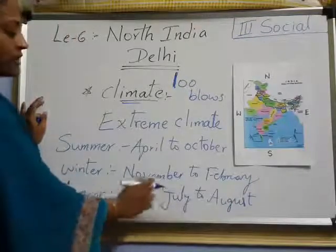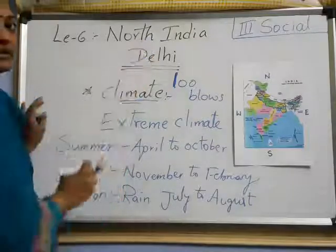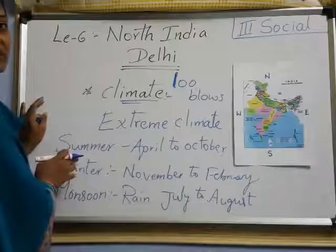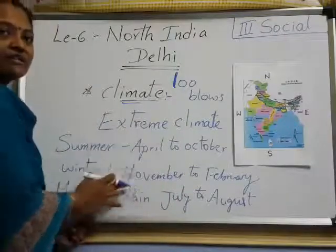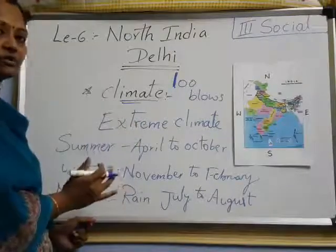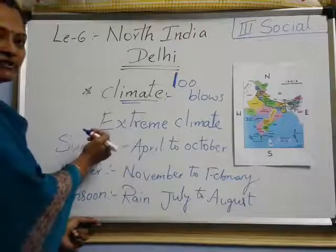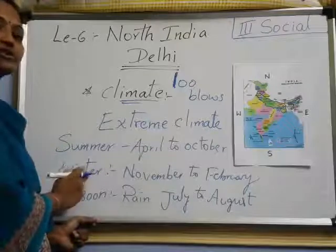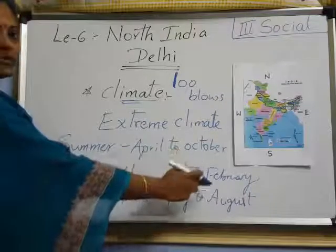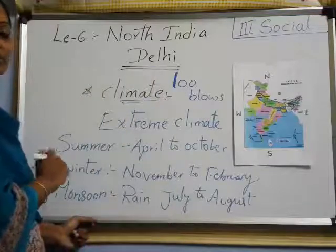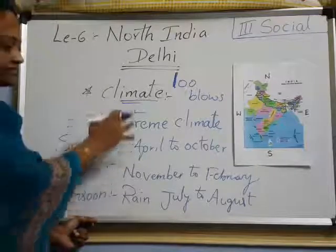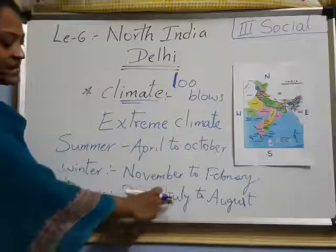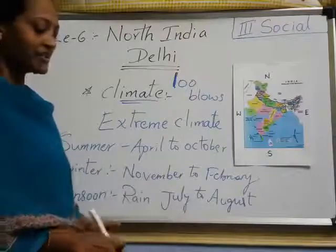Rain falls during those months. Mainly in Delhi, we find rainy season during the months of July to August. In this month, sometimes we find summer also. Have you understood the climate? How the climate is — extreme climate means very hot and very cold. Very hot during the summer, with hot and dry winds — those winds we call as Loo blows — from April to October. And very cold during the winter months, which are November to February. We find winter season in Delhi. Monsoon means rainy season, which we find in the months of July to August.